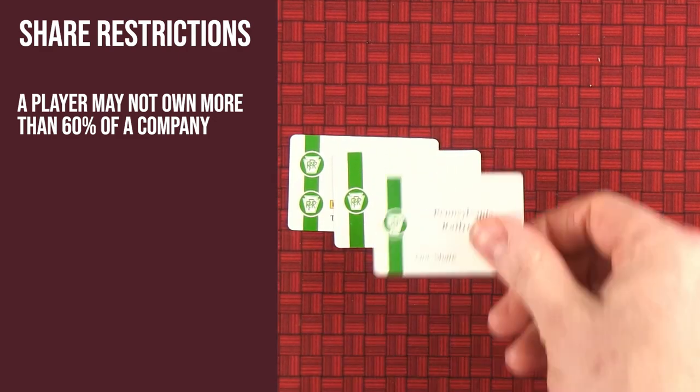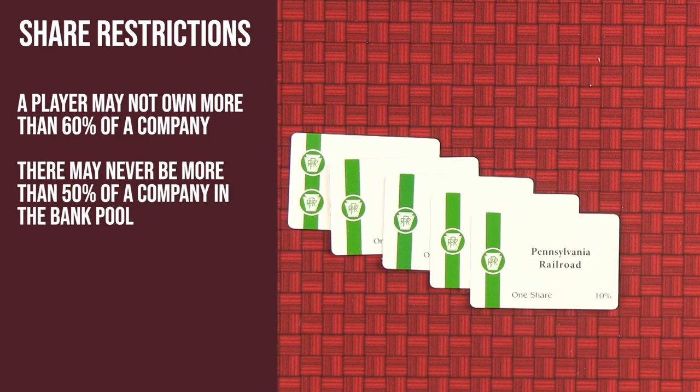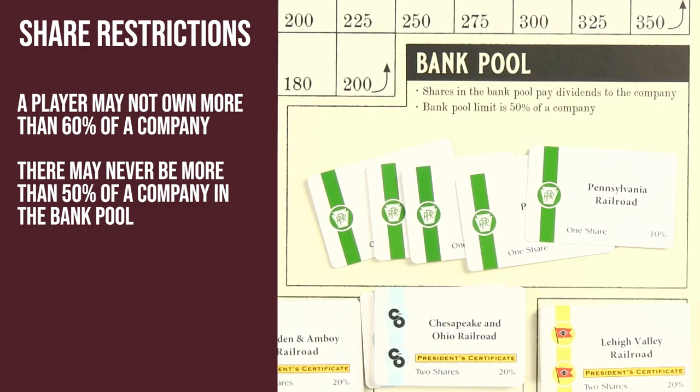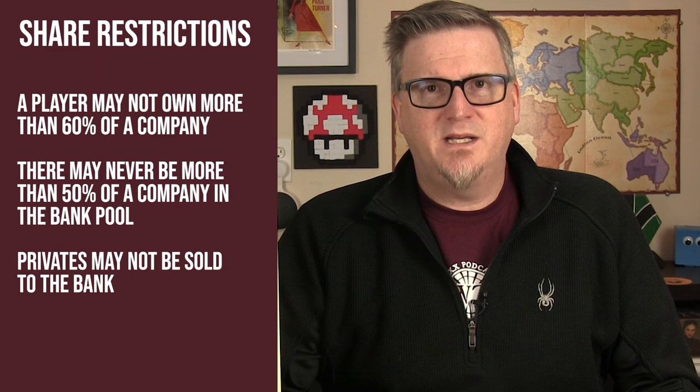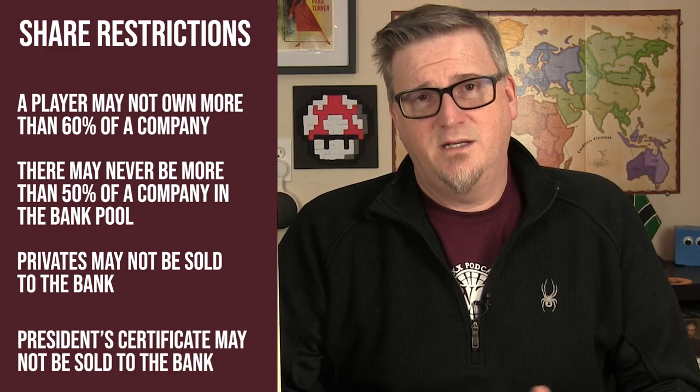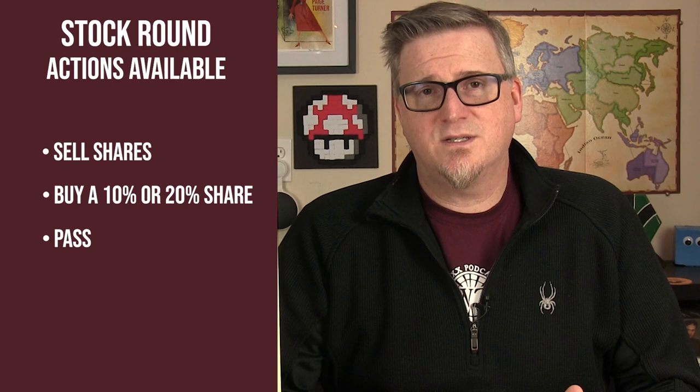There are other restrictions on shares: a player may never own more than 60% of a company, the bank pool may never have more than 50% of a company in it, private companies may not be sold to the bank, and a president share may never be in the bank. During the stock round, you may sell shares that you possess, buy a single share or the presidency of an unopened company, or simply pass. Players may pass and re-enter the round at any time, and the stock round ends once all players have passed consecutively.